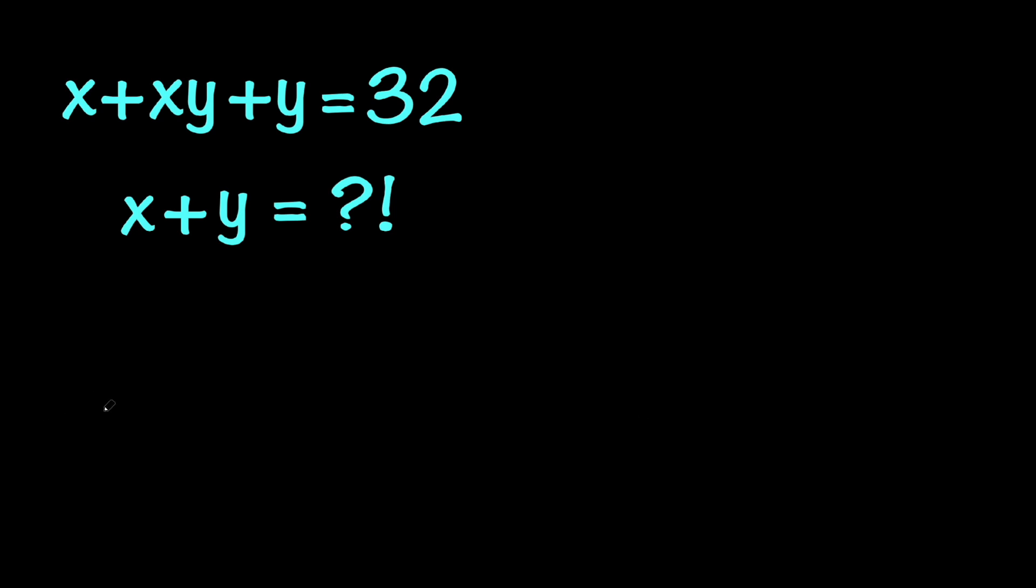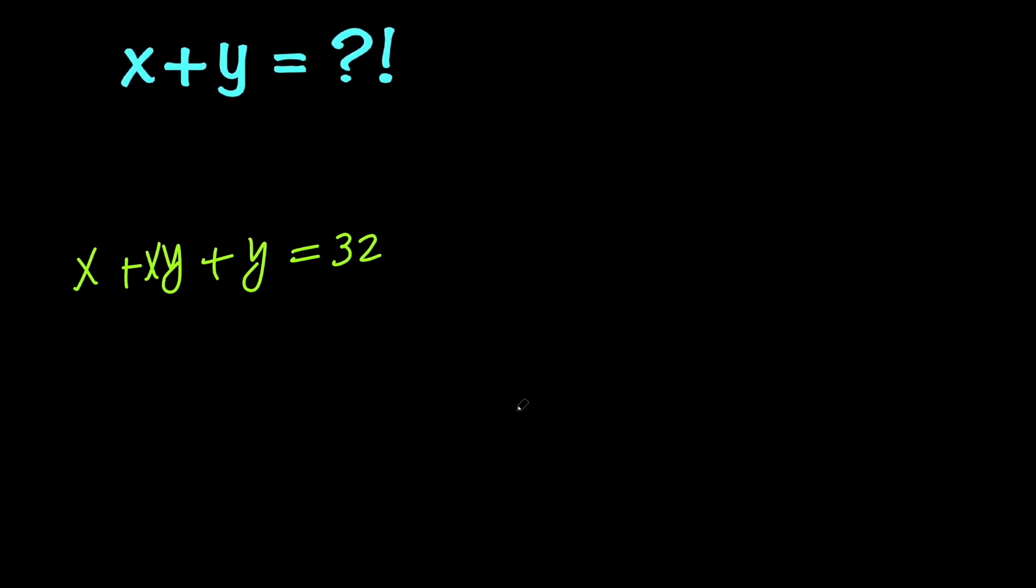So we have x plus x times y plus y equals 32. And remember that x and y are integers. Now, whenever we are dealing with integer solutions, one of the things that we need to do is to factor as much as we can.